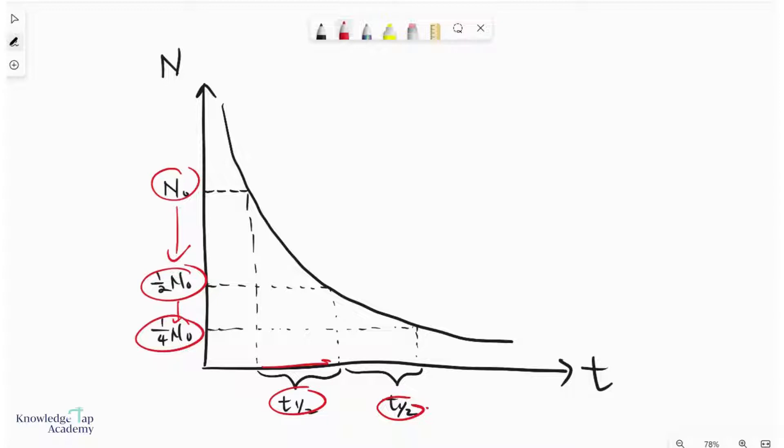And so just remember that all radioactive decay are constant half-life processes. So this makes it easy for us to predict how many undecayed nuclei there would remain.